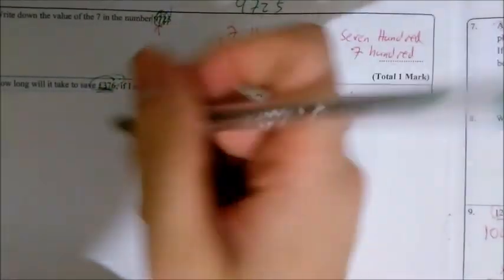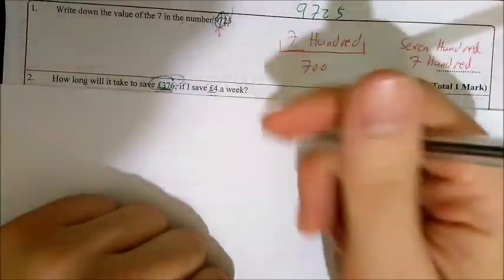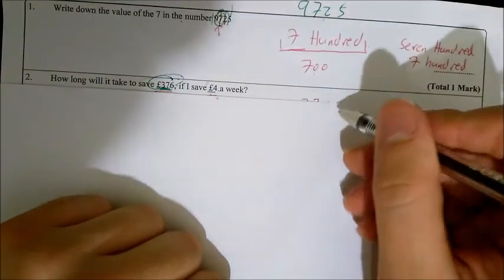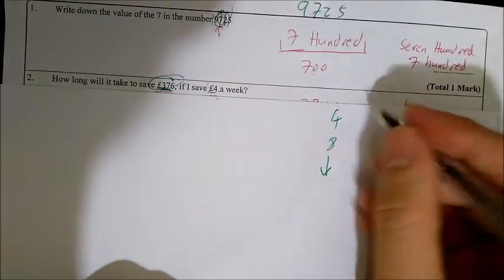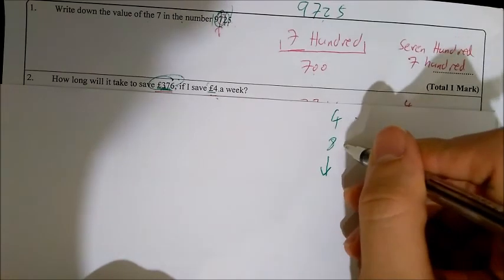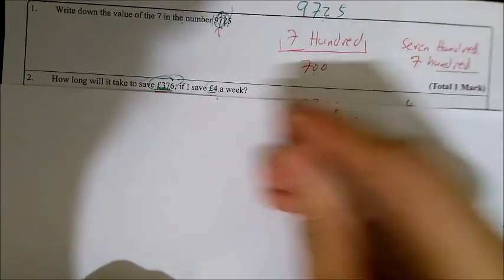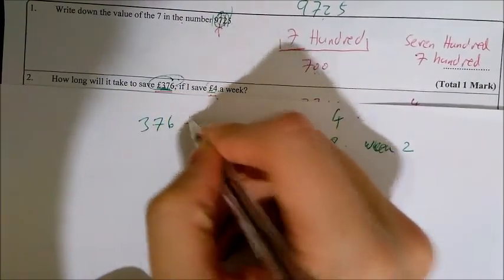Question two: How long will it take to save 376 if I save £4 a week? Sorry if the camera starts to go a bit funny. For this question, I could do two ways. Either I could write 4, 8 and write my 4 times tables until I get to 376. Or, if you think about it, instead of multiplying up to find 376, I could just do 376 divided by 4.